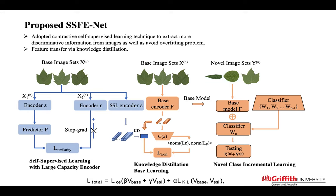Here is the architecture of the proposed self-supervised feature enhancement network. By using a contrastive self-supervised learning network with a large capacity backbone, the model is capable of discovering more discriminative regions from the images without an overfitting problem. The self-supervised learning features enhance those from the base encoder and produce more robust and representative embeddings.